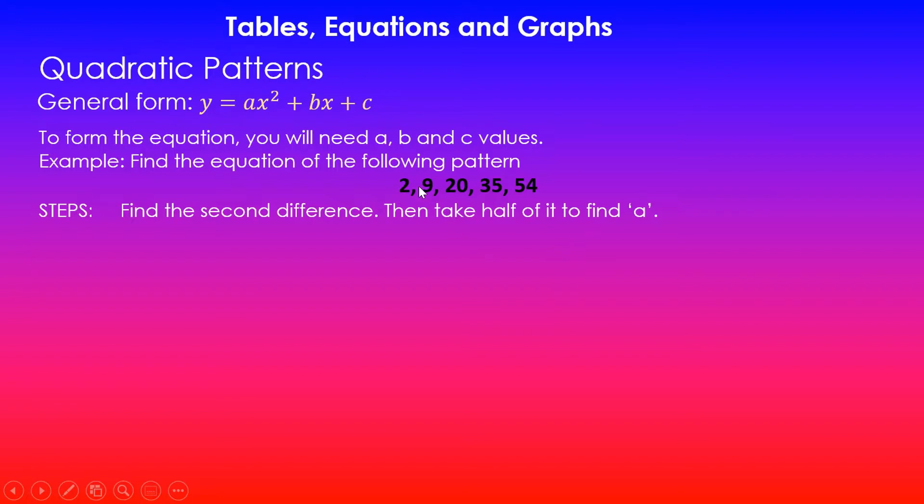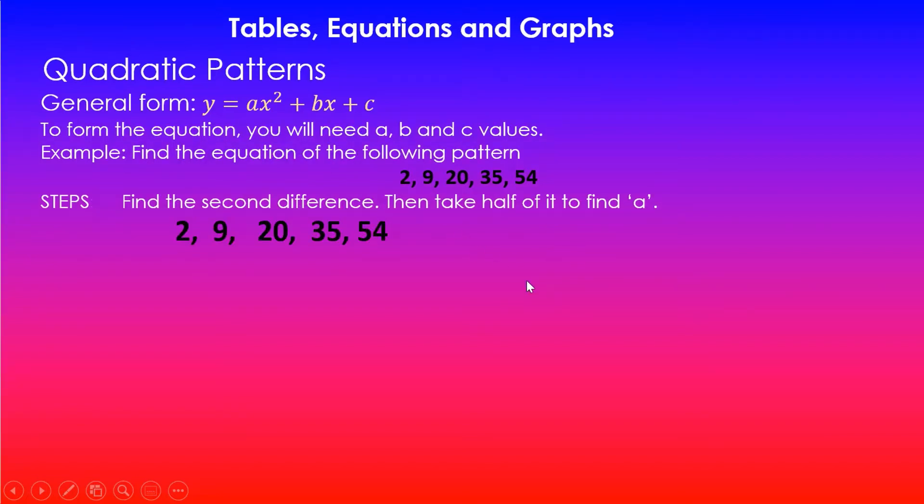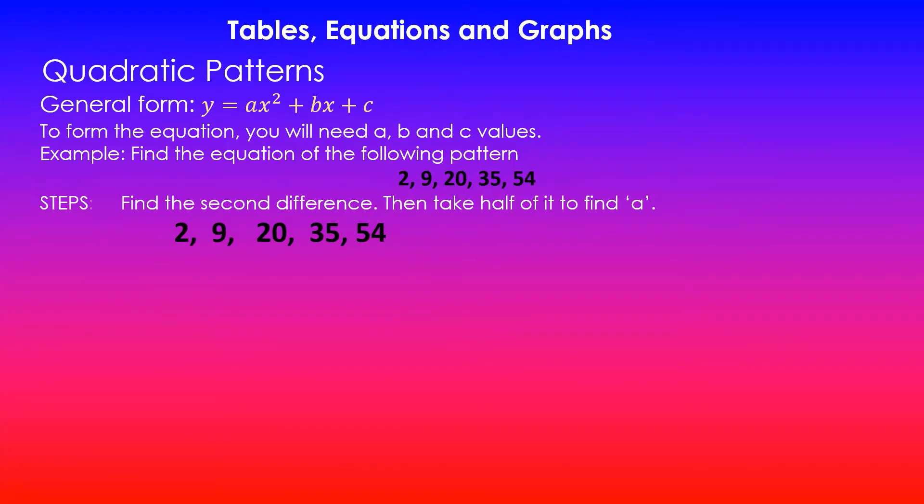Let's quickly do that. I've got 2, 9, 20, and so forth. These are the patterns. You can see that it's going up by 7, then the next one goes up by 11, and then 15. So it's not going up by a constant term. Therefore, it is not linear. So we'll find the second difference to see if it is quadratic.